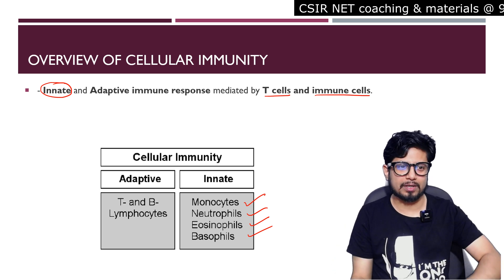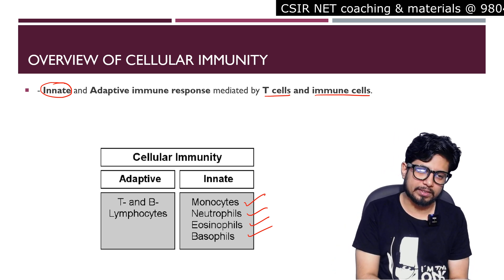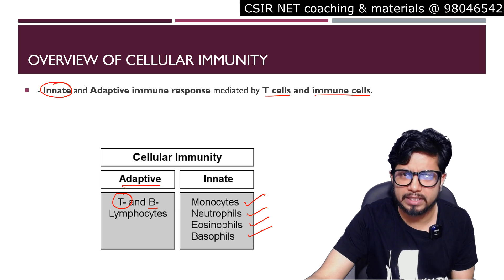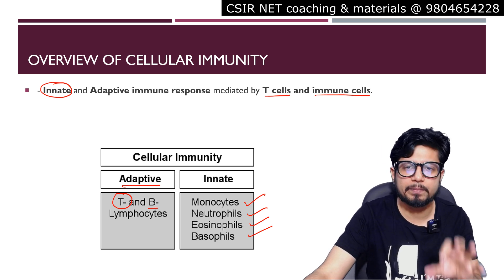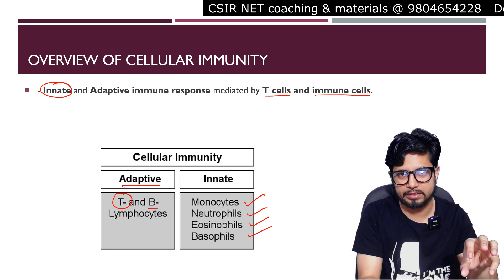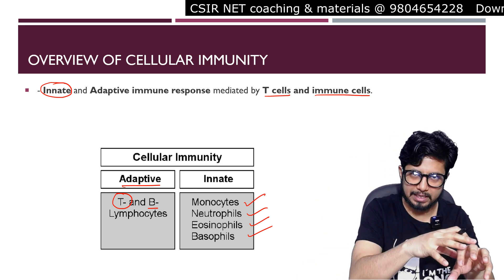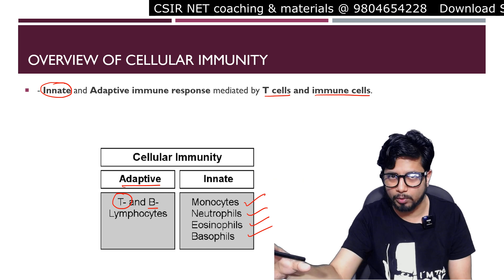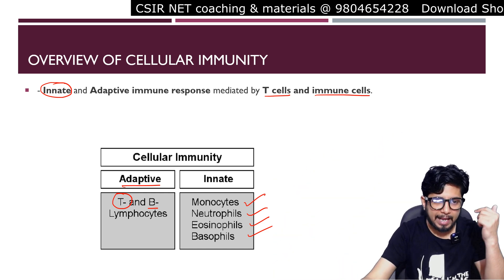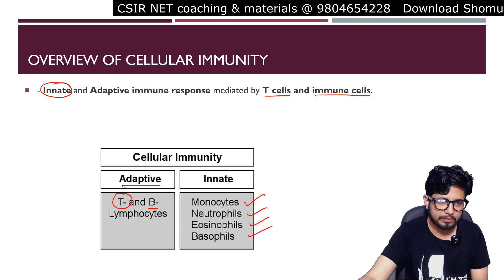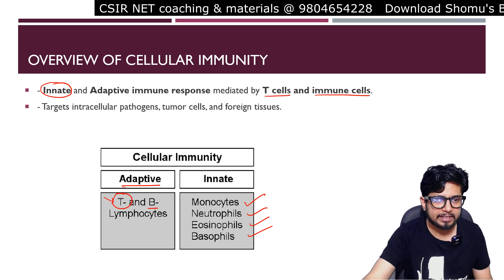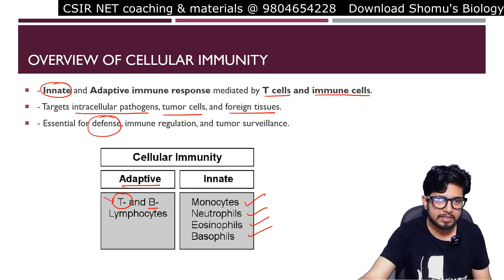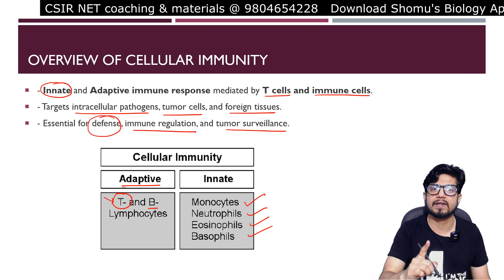For the adaptive part of cell-mediated immunity, T cells play the most important role. B lymphocytes are also cells, but they have a crosstalk between cell-mediated immunity and humoral immunity, because B cells are converted to plasma cells upon activation, and plasma cells produce antibodies, which is part of humoral immunity. T cells target intracellular pathogens, tumor cells, and foreign tissues, and are essential for defense, immune regulation, and tumor surveillance.